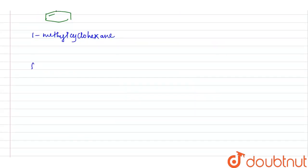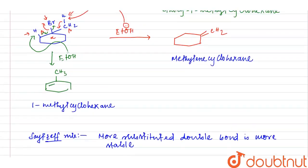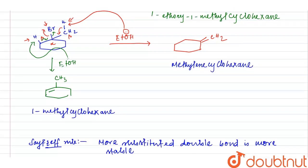Now according to Saytzeff rule, more substituted double bond is more stable. So that's why 1-methylcyclohexene is more substituted than methylcyclohexene, that's why 1-methylcyclohexene will be our most stable elimination product.